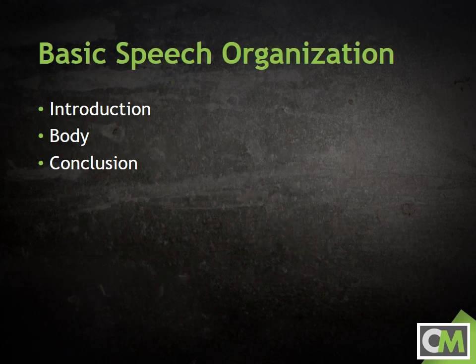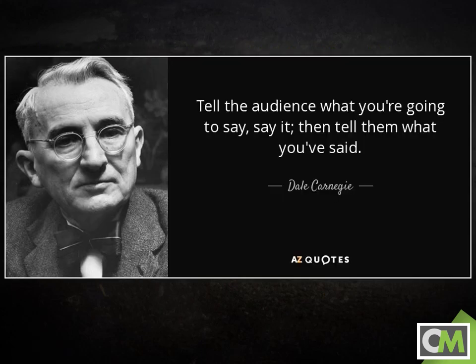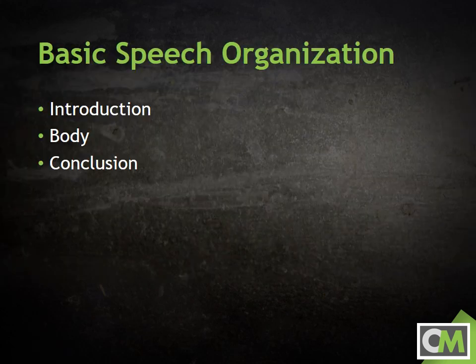In the most basic sense, there are three parts of a speech's organization: the introduction, the body, and the conclusion. Dale Carnegie summarized speech organization by saying, tell the audience what you're going to say, say it, and then tell them what you've said. The introduction previews and sets everything up for the audience. The body provides the substance and details. And the conclusion brings it all back around in summary. Each of these three components is important to the ability of the audience to follow along with and comprehend your speech.